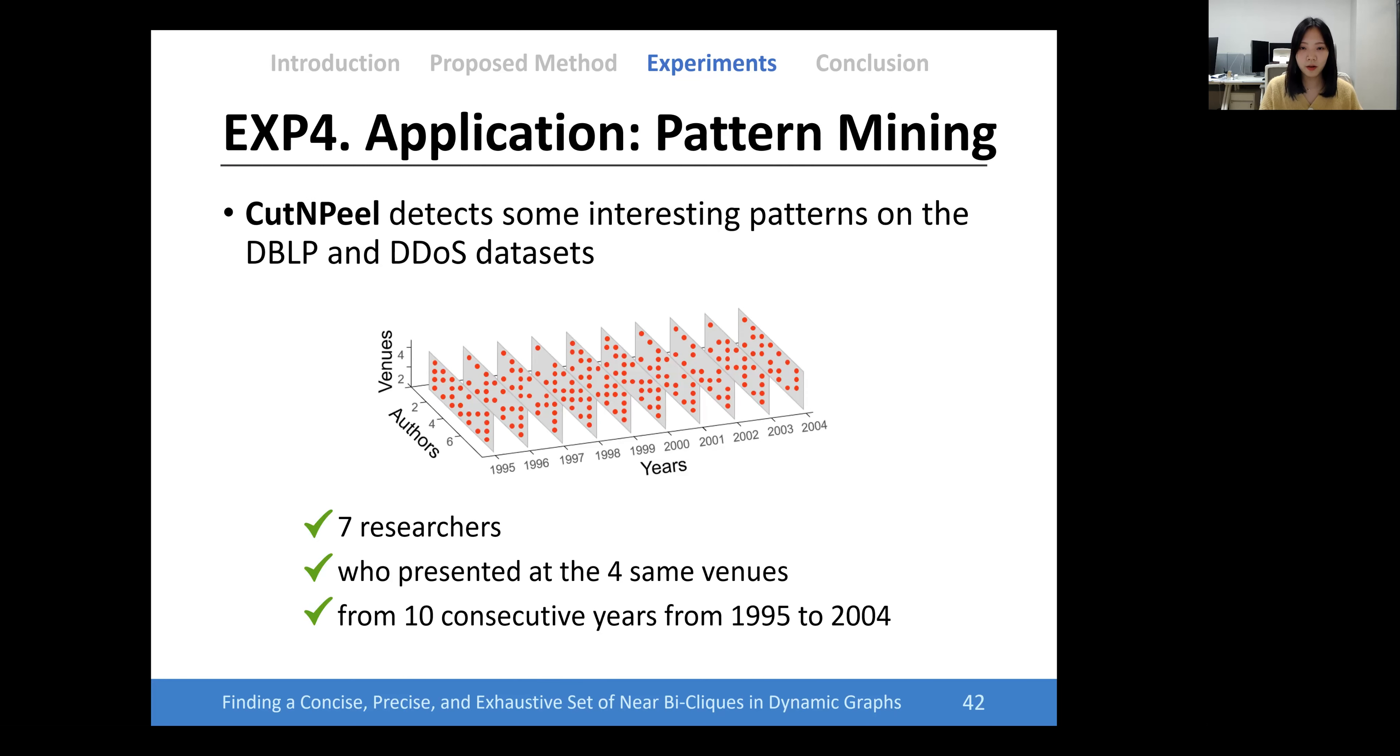Finally, we plot some interesting near bi-cliques detected in DBLP and DDoS datasets. In the example figure, Cut and Peel detected a near bi-clique that includes seven researchers who presented at the same four venues during 10 years.